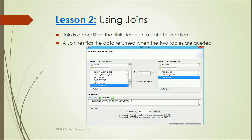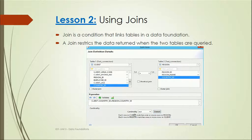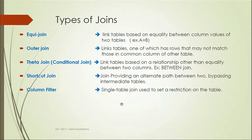A join is a condition that links tables in a data foundation. A join restricts the data returned when two tables are queried. These two tables are joined based on some condition or relationship. In the Edit Join dialog, when creating a join, we can set their properties and validate the expression to check whether it is correct.